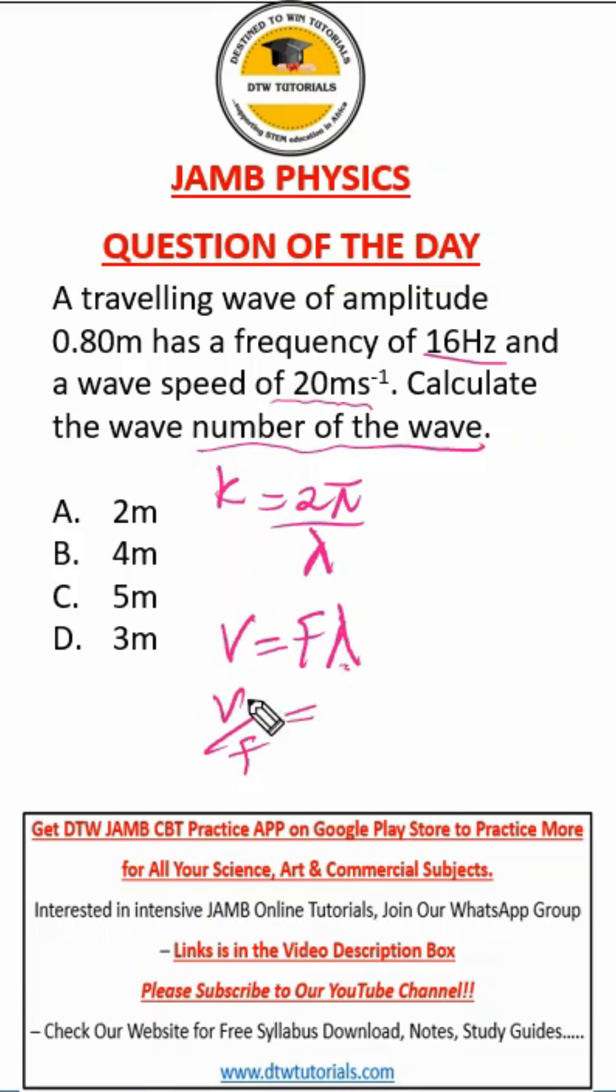What would that be? V over f is 20 over 16. Our frequency is 16. Punch your calculator, it will give you 1.25. That's the wavelength in meters.